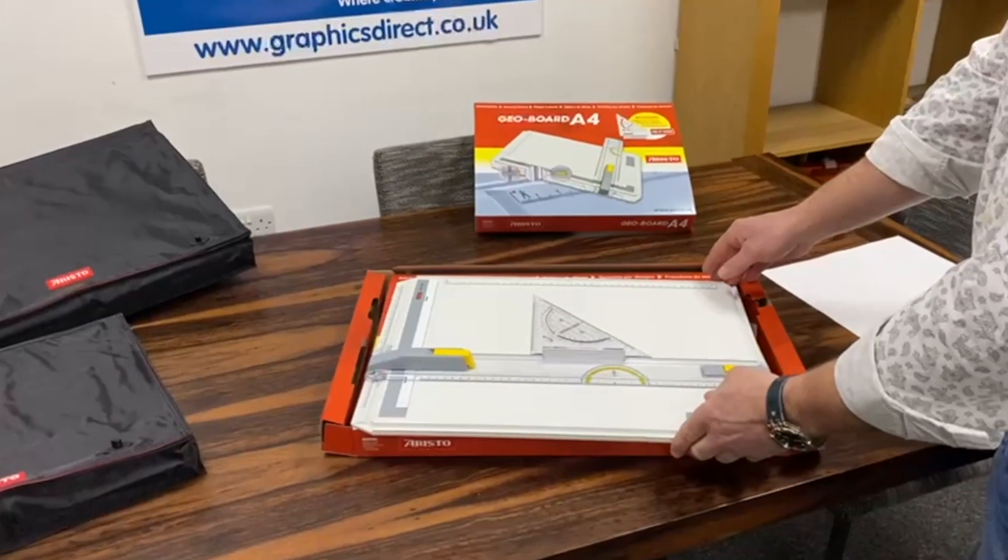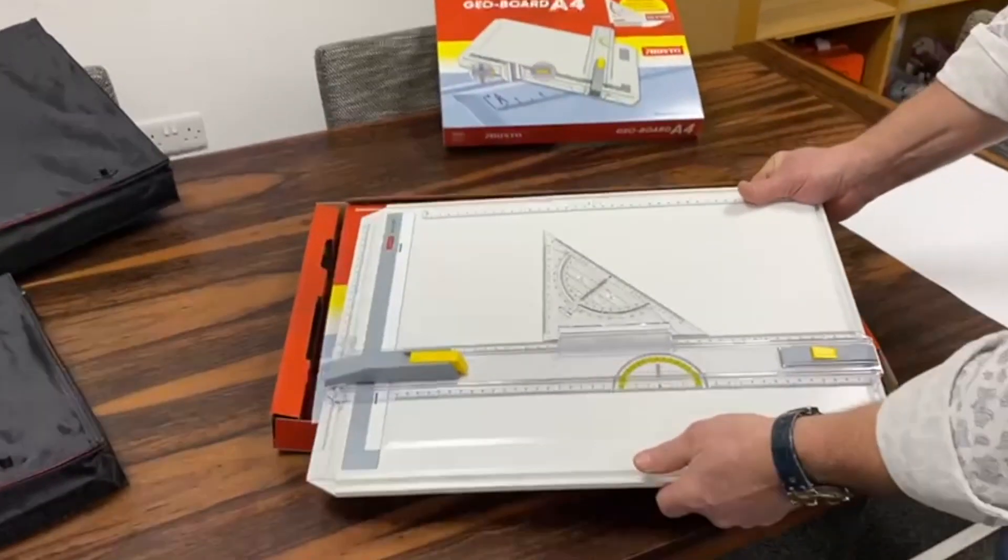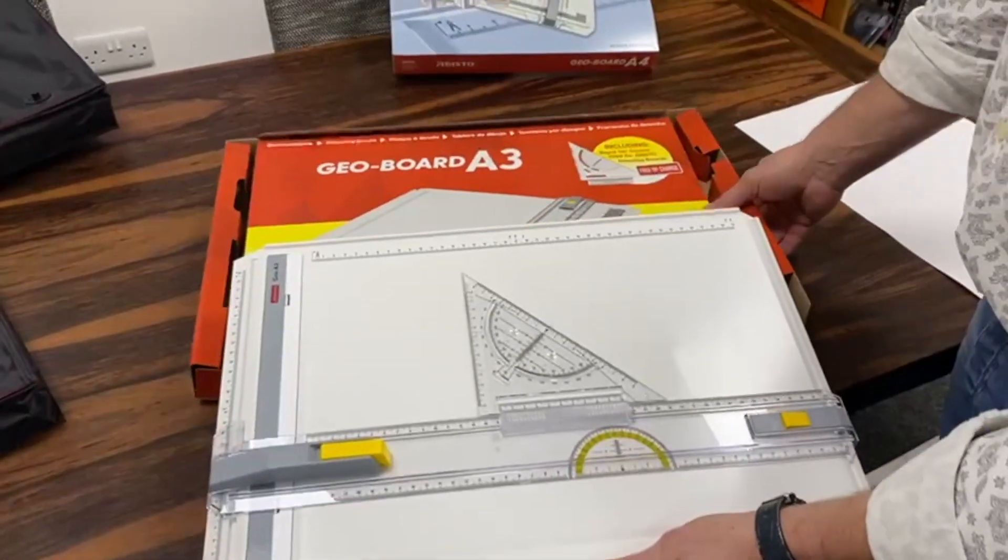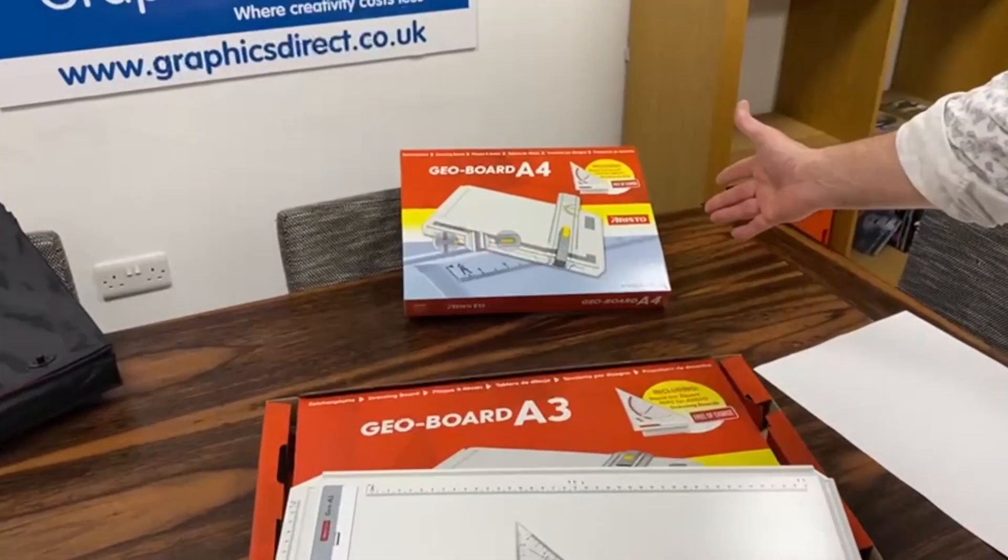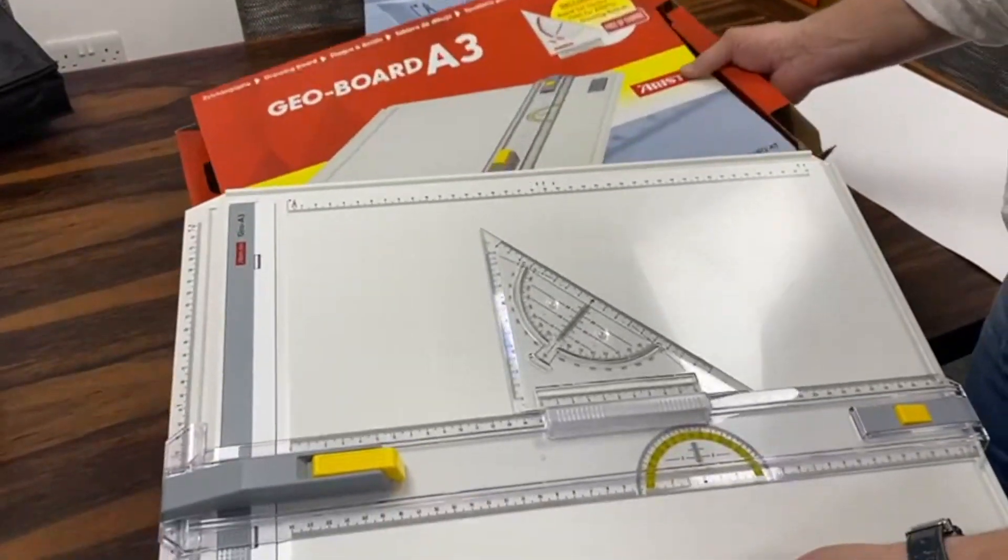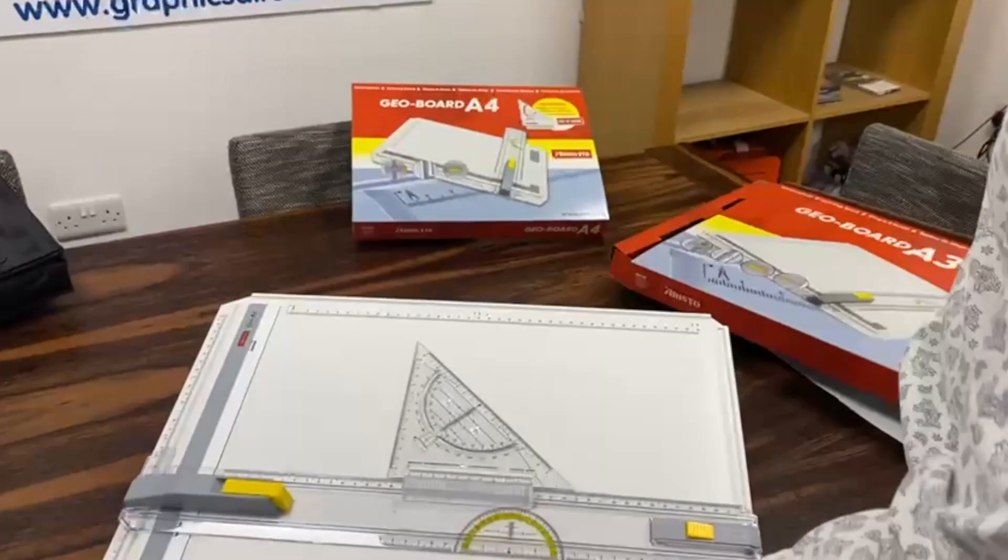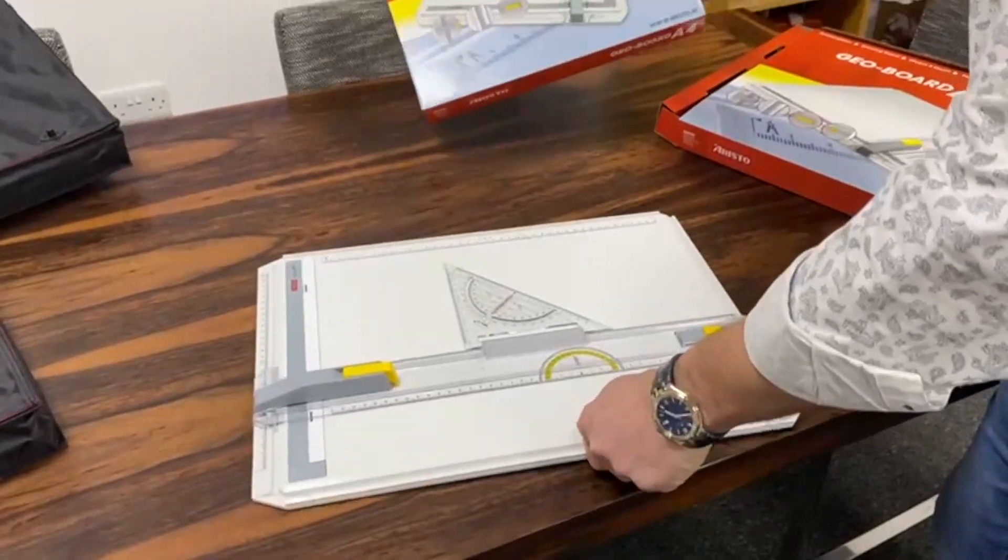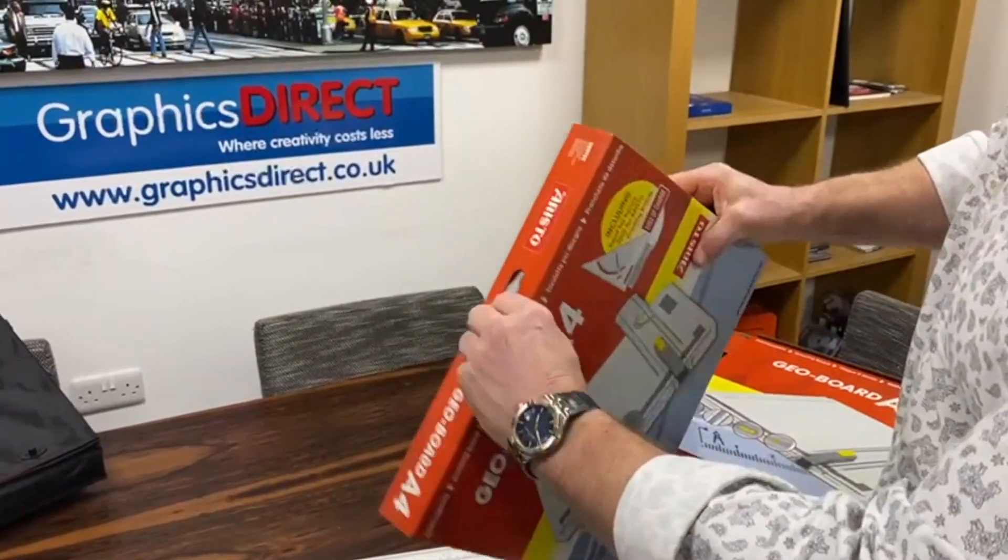If you're after a truly portable drawing board, we have the Aristo Geo board in A3 and A4 versions. I've just taken this one out of the box, which can double up as a little carrying case, as you can see with the A4 version with a carrying handle at the top.